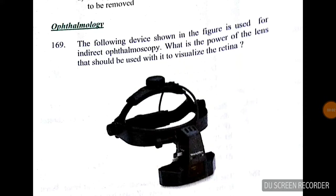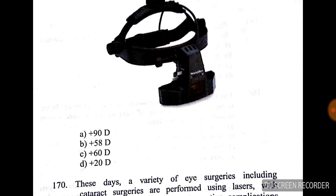Good evening doctors. Today we are going to discuss AIIMS PG 2015, 16, 17 MCQs — May and November. First, MCQ 169, ophthalmology: the following device shown in the figure is used for indirect ophthalmoscopy. What is the power of the lens that should be used to visualize the retina? Here are all four options.